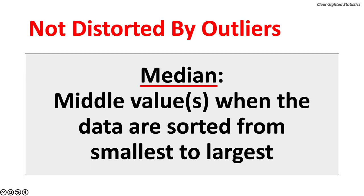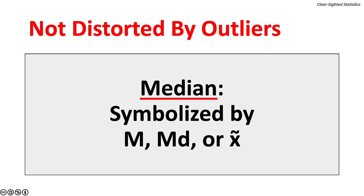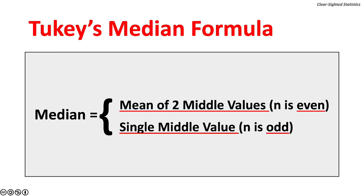The median is not distorted by outliers because it is based only on the middle value or values when the data are sorted from smallest to largest. The median should be reported whenever the mean could be distorted by outliers — measurements of salary, income, and housing cost should be reported using the median. The median is symbolized by M, MD, or X-tilde. The median is the mean of the two middle values when N is even, and the single middle value when N is odd. The data must be sorted in order of size.